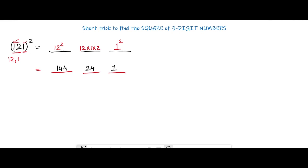So 1 squared is 1, 12 into 1 into 2 is 24, and 12 squared is 144. I recommend all students learn the squares from 1 to 20 for easy calculation. Considering only the unit digit: 1 stays, then 4 is the unit digit of 24, and 2 carries over and gets added to 144 — 144 plus 2 is 146. So the square of 121 is 18769, calculated in less than 10 seconds.